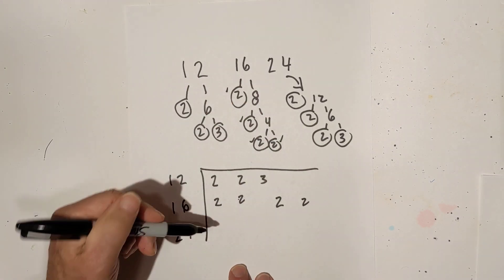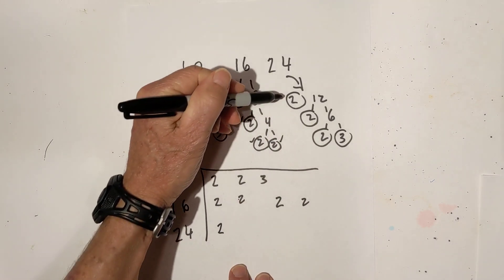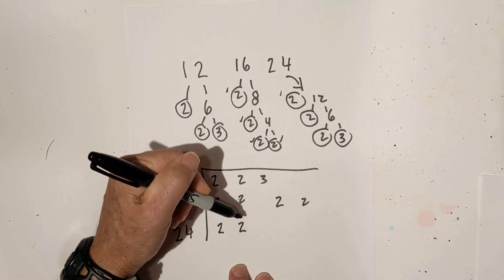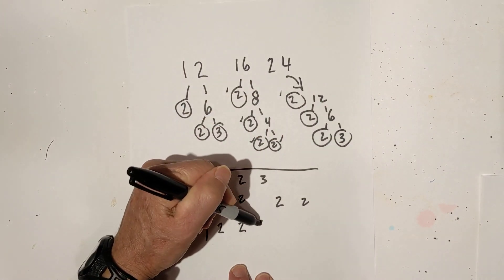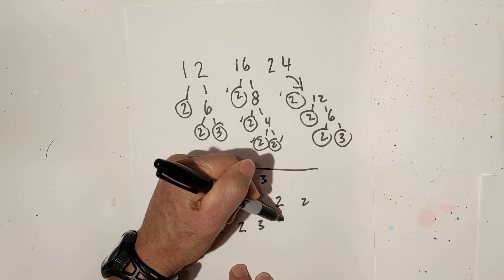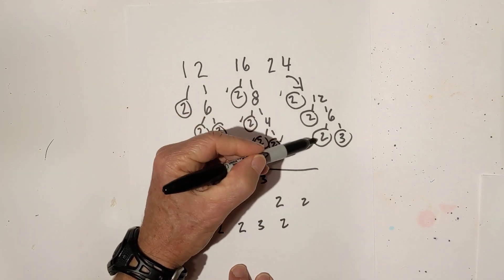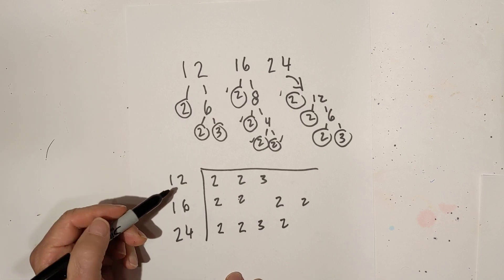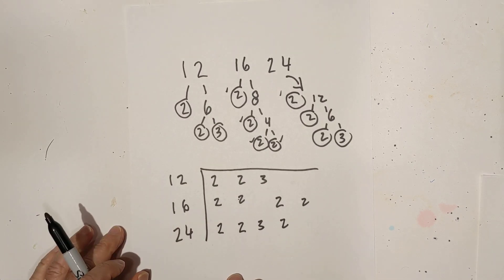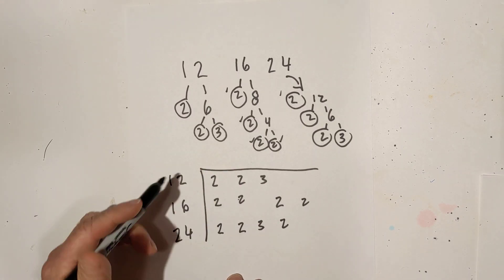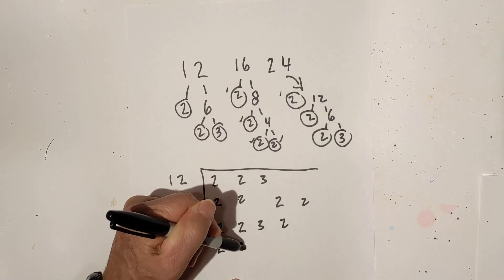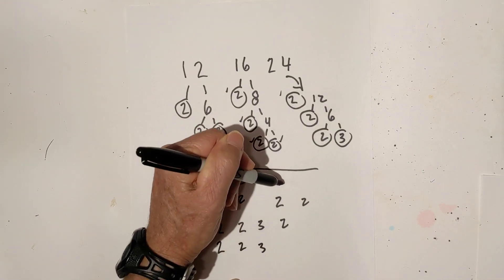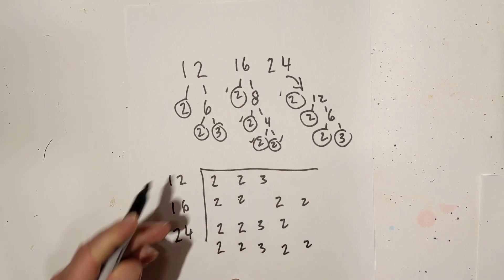And now for 24, I will do the same. I have a 2, a 2. I do have a 3, so I'm going to place a 3 there, and then I have a 2. So I have got all the numbers. Now again, if you have 2 or 3 in a column, you only bring down 1. So I've got a 2, and a 2, and a 3, and a 2, and a 2.